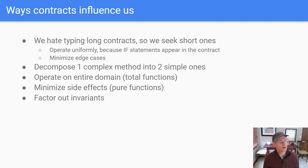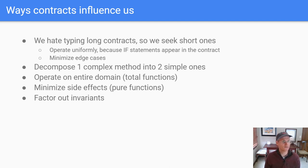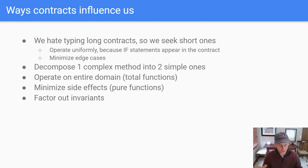Another way contracts influence us towards good designs is that they encourage us to decompose one complicated method into two simpler ones. Also, from the testing angle, it's the same kind of force: it can be much easier to say what one simple thing does — for example, add — than to jam together add plus the bug fix. You end up separating things out and having greater confidence that the small things work in isolation very simply.